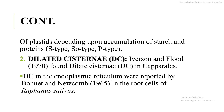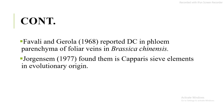The second ultrastructural character is dilated cisternae (DC). Wasson and Flood (1970) found dilated cisternae in capitula. DC in the endoplasmic reticulum were reported by Bonnett and Newcomb in 1965 in the root cells of Raphanus sativus. Favali and Gerola (1968) reported DC in phloem parenchyma and phloem veins in Brassica genensis. Gergensen (1977) found them in Capris seed elements with evolutionary origin.